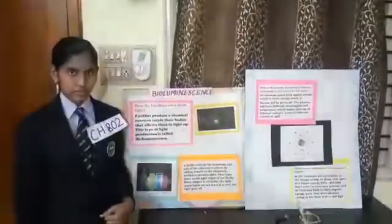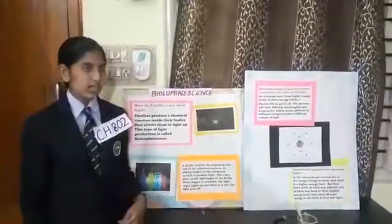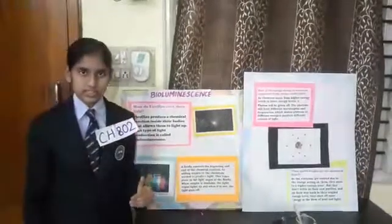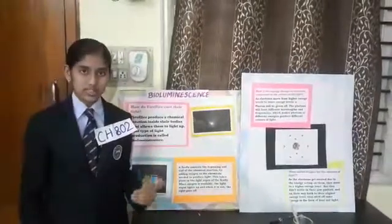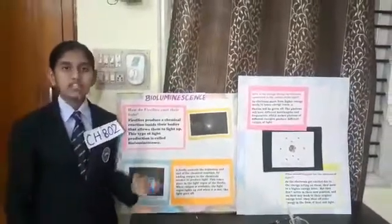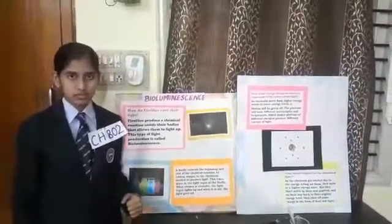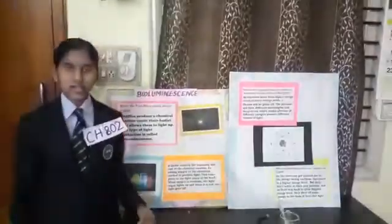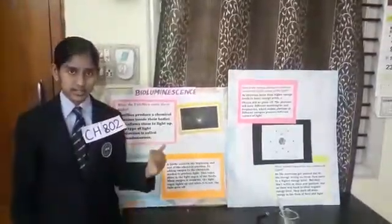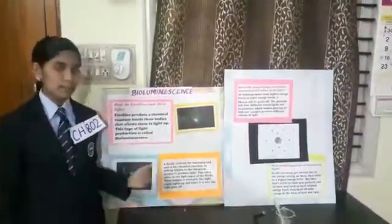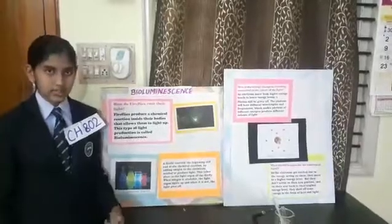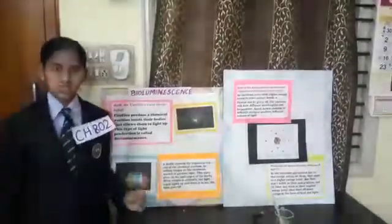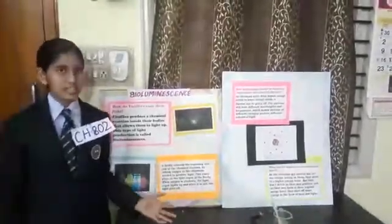Let's take the example of fireflies. Fireflies produce a chemical reaction in their bodies which allows them to emit light. This special type of emission of light is called bioluminescence. A firefly controls the starting and the ending of this emission of light, which is a chemical reaction, by producing oxygen to the chemicals.